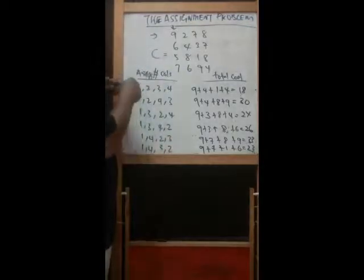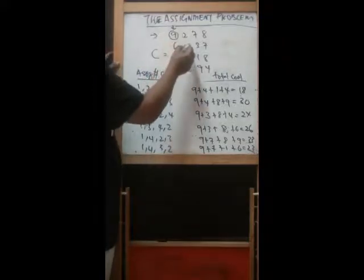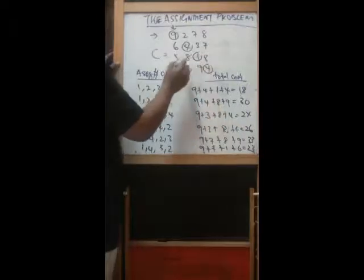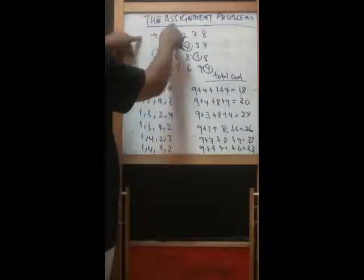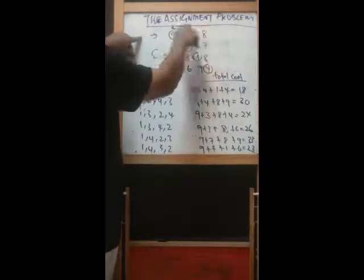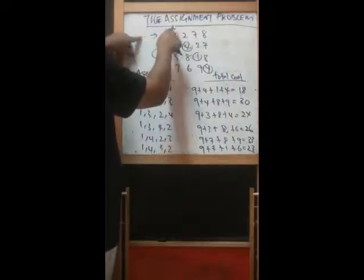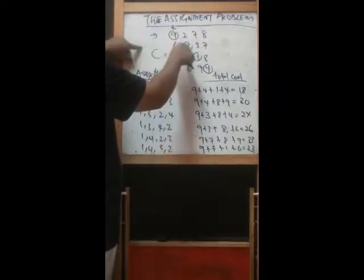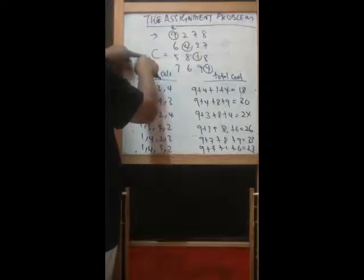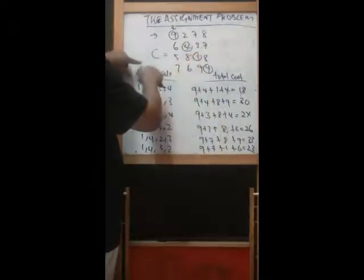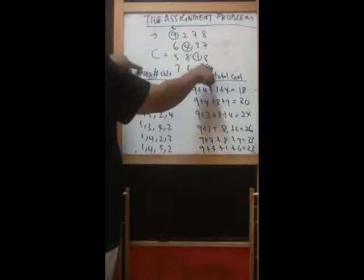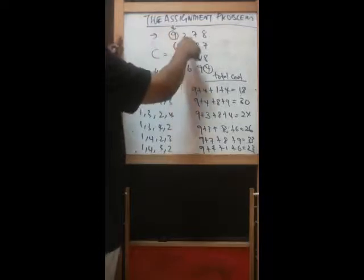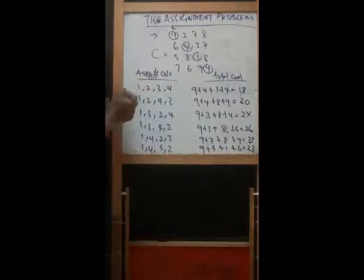For person one we take this job, person two we take this job, person three we take this job, person four we take this job. So actually one person only one job for each. Person one takes only job zero not the rest, person two takes only job two not the others, person three takes job three not the others, person four takes job one not the others. We can see here actually only one person, one job, and there's no overlapping in terms of person and in terms of job here.